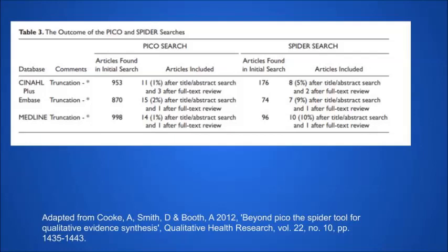Regarding intervention or exposure versus phenomena of interest: qualitative research aims to understand the how and why of certain behaviors, decisions, and individual experiences. Therefore, an intervention or exposure per se is not always evident in qualitative research — hence the shift from intervention to Phenomena of Interest. Regarding the shift from comparison to design: the theoretical framework used in qualitative research determines the research method used. Since inferential statistics are not used in qualitative research, details of the study design help make decisions about the robustness of the study. It may also increase the detection of qualitative studies in databases and unstructured abstracts.